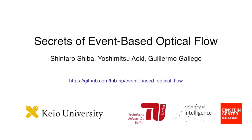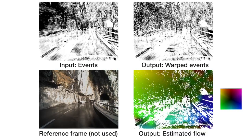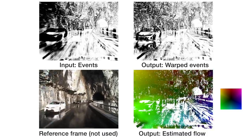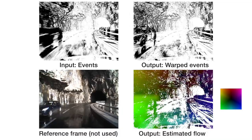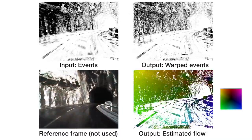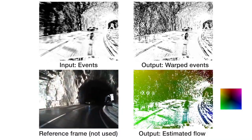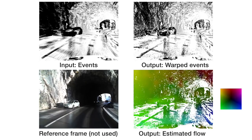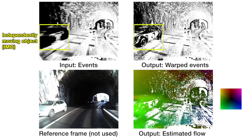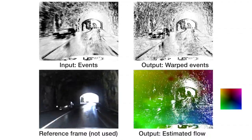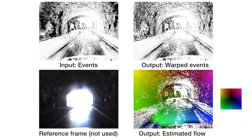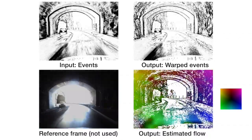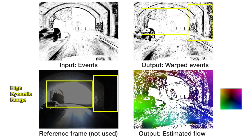Welcome to our paper, Secrets of Event-Based Optical Flow. We develop a principled method for event-based optical flow estimation. Our model-based method takes only event data as input, estimates dense optical flow, and produces warped events which reveals the sharp edge structure of the scene. Our method can estimate dense optical flow for complex scenes such as scenes with independently moving objects, and also in high dynamic range thanks to event camera advantages.